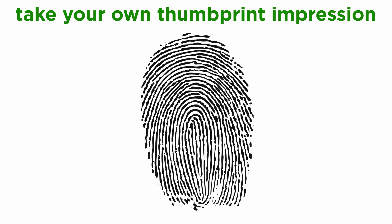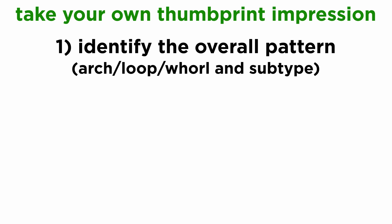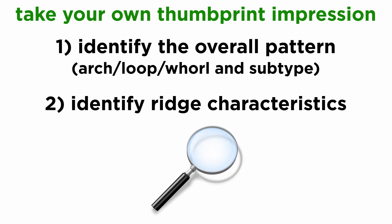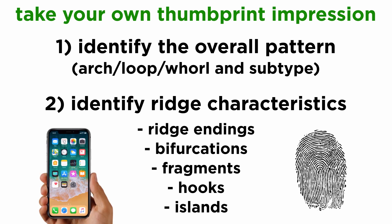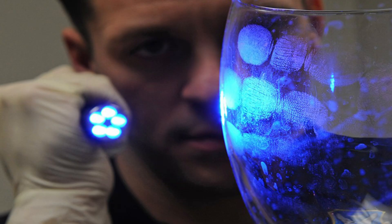Now that we've learned all about individualizing a fingerprint pattern, it's time for some homework. Take your own thumbprint impression on a plain sheet of paper. From the previous tutorial, you should be able to determine its overall pattern. Now, with the help of a magnifying glass, observe the ridge characteristics and spot details such as ridge endings, bifurcations, fragments, hooks, islands, and so forth. If you do not have a magnifying glass, capture a photo on your smartphone and study the details by zooming in on them. If possible, take a magnified printout of the thumbprint, study the details in a clockwise direction, and label them accordingly. Try to identify as many Galton details as you can. Once you're finished, let's move forward and learn about fingerprint deposition.